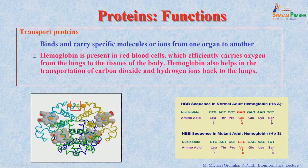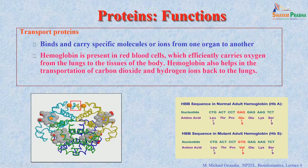Hemoglobin has 4 subunits: 2 alpha subunits and 2 beta subunits. The beta subunits contain a specific residue called glutamic acid. This is the structure of the hemoglobin beta chain. If there is a change in the nucleotide or the change in the amino acid, this will affect the transport.